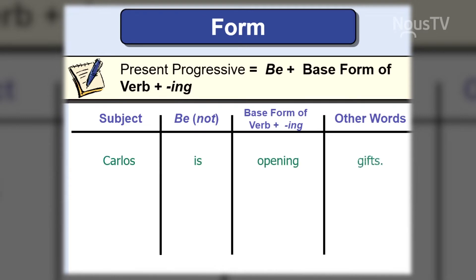So this is our first sentence. Carlos — subject — is — verb to be — opening — verb plus -ing.